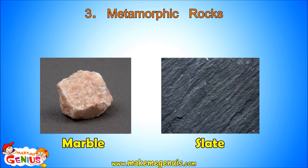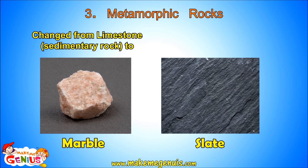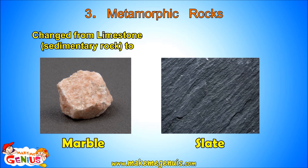Marble and slate are two types of metamorphic rocks. Marble is formed when limestone, which is a sedimentary rock, comes under a lot of pressure from above. Similarly, slate is formed when clay is changed by heat and pressure.